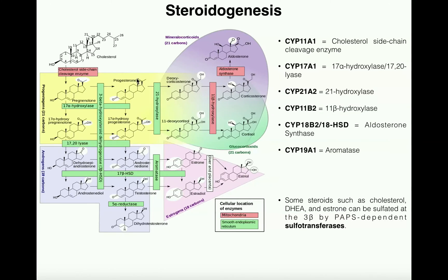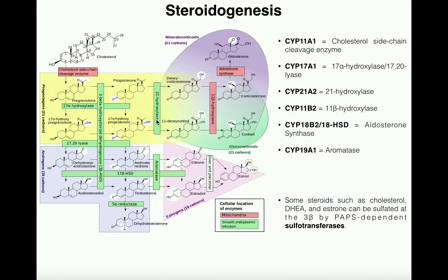Progesterone can act independently or be processed into aldosterone, while 17α-hydroxyprogesterone is processed into cortisol. The next enzyme in both pathways is 21-hydroxylase, a P450 enzyme encoded by CYP21A2, which hydroxylates carbon 21. Progesterone is hydroxylated into deoxycorticosterone, and 17α-hydroxyprogesterone is hydroxylated into 11-deoxycortisol. Both 3β-hydroxysteroid dehydrogenase and 21-hydroxylase are microsomal enzymes.